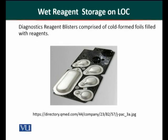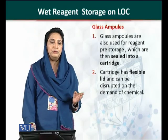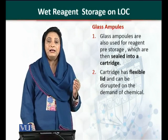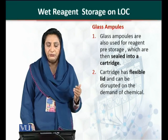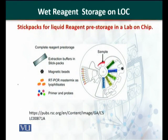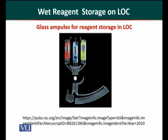The third type is the glass ampoule — the reagent is stored in glass ampoules, and these ampoules are packed in cartridges. The cartridge lid can be removed whenever required; it is a flexible lid. You can see in this diagram a stick pack for liquid reagent pre-storage in a lab on chip, in which a buffer for DNA extraction is stored, along with magnetic beads, RT-PCR chemicals, and primers and probes. The glass ampoule storage type shows three different solutions — red, blue, and yellow — all packed in glass ampoules.